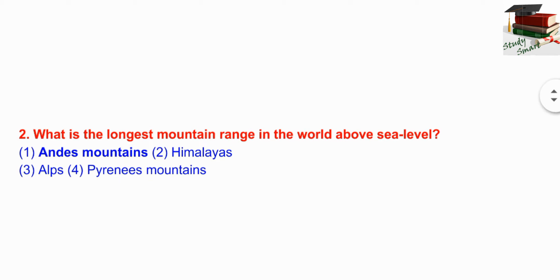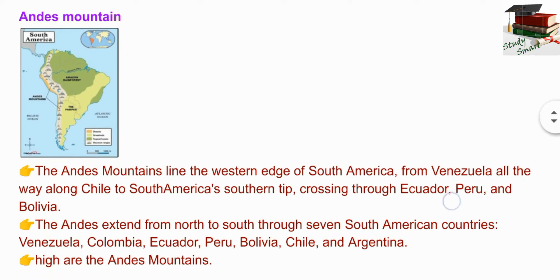Next question: which is the longest mountain range in the world above sea level? The right answer is the Andes mountain. This mountain lies in the western edge of South America, from Venezuela all the way along Chile to South America's southern tip, crossing the equator through Peru and Bolivia.